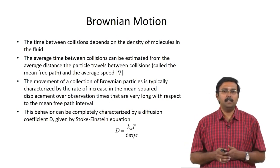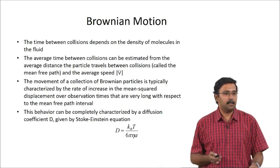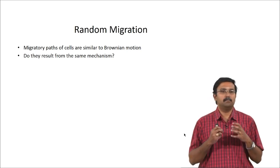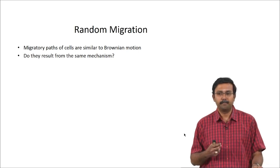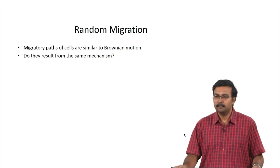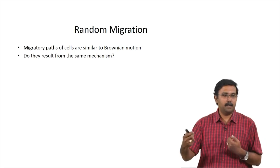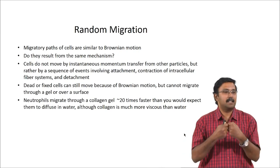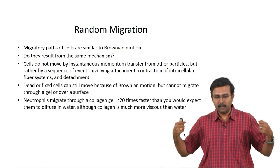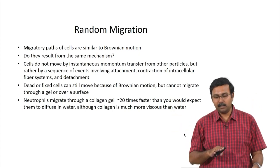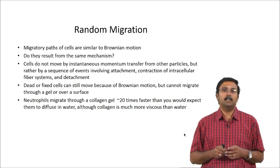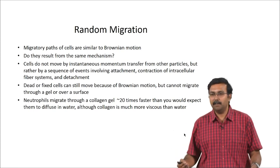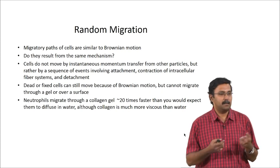This random migration behavior can be characterized by a diffusion coefficient D given by the Stokes-Einstein equation. Although random cell migration can look like Brownian motion, the mechanisms differ. There would not be collisions between cells causing momentum transfer — change in direction happens because of adhesive properties and other factors. Also, the change in direction for cells is not instantaneous as in molecular collisions; cell migration direction change is very, very slow. It is not a transfer of momentum but a sequence of events including attachment to a new surface, contraction of the intracellular fiber system, and detachment from the previous surface.